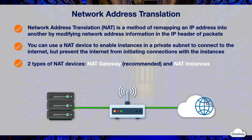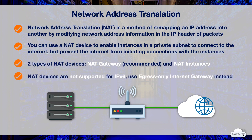AWS offers two types of NAT devices: NAT gateway or NAT instances. AWS recommends NAT gateways, as they provide better availability and bandwidth over NAT instances. The NAT gateway service is an AWS-managed service that does not require your administration efforts, whereas a NAT instance is an EC2 instance launched from a NAT AMI. NAT devices are not supported for IPv6 traffic — you should use an egress-only internet gateway instead.